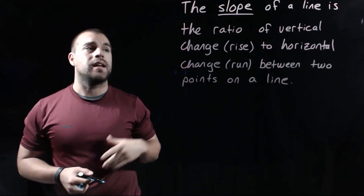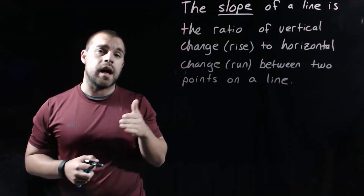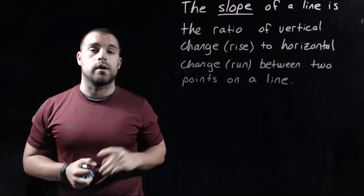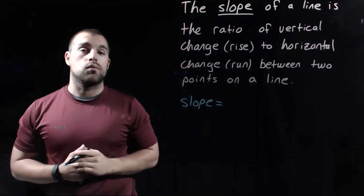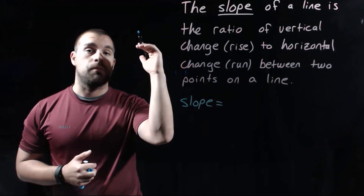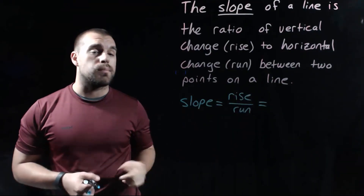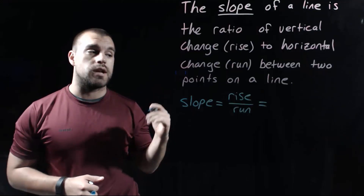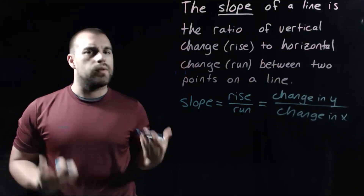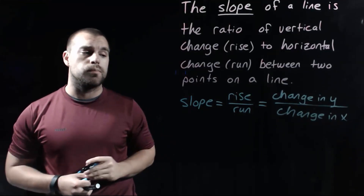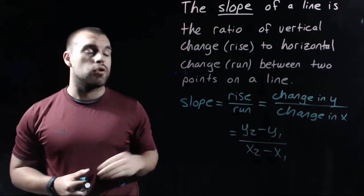When we're talking about the slope of a line, it is the ratio of vertical change, which we're going to call the rise, compared to the horizontal change, which we're going to call the run, between two points on a line. There are a few different ways we can represent slope. One way is by making a fraction and putting our rise over our run. Another way is by saying the change in y over the change in x. We've also got a formula: y2 minus y1 over x2 minus x1.